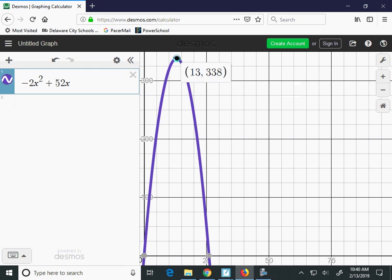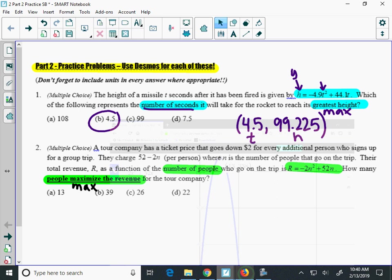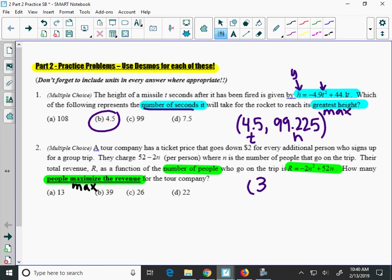I click on the vertex there, and I get the vertex of 13, 338. So when I look at 13, 338, I need to know which value I'm looking at. Well, the letter that's acting like an x here is the n. The n is the number of people. The r is acting like y. That's your r. And that's the revenue.